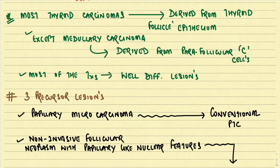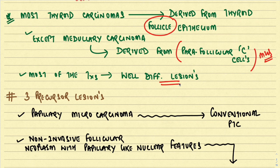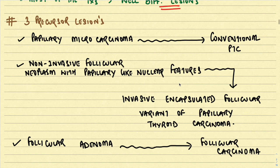Most thyroid carcinomas are derived from the thyroid follicular epithelium, except the medullary carcinoma, which is derived from the parafollicular C cells — a very important MCQ point. Most of these tumors are well-differentiated lesions, meaning they are either papillary or follicular, wherein we can understand the nature of the lesion.